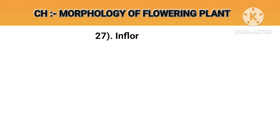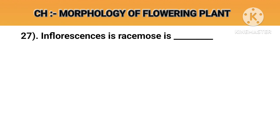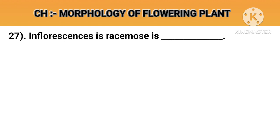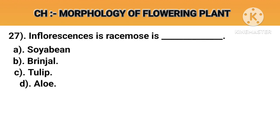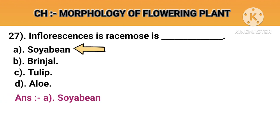Question number 27. Inflorescence in racemose. Option A: Soyabean. Option B: Brinjal. Option C: Tulip. Option D: Aloe. Answer A: Soyabean.